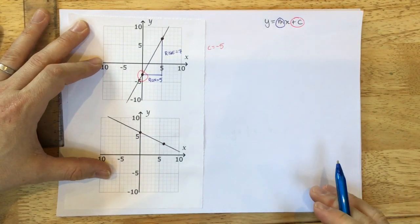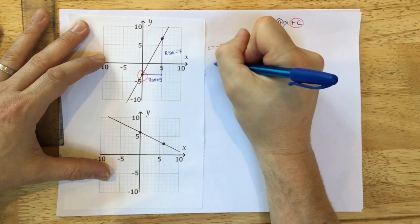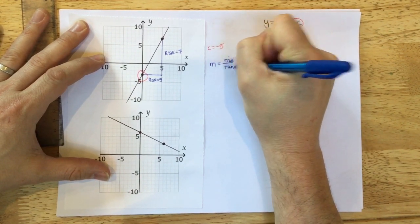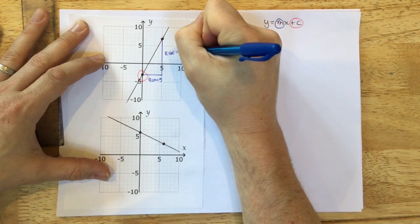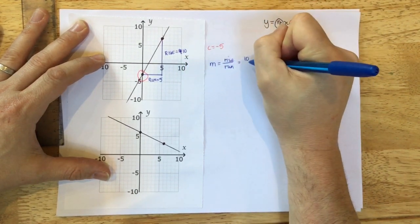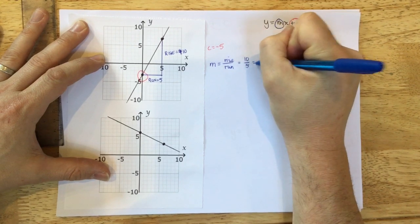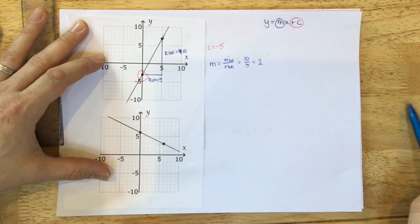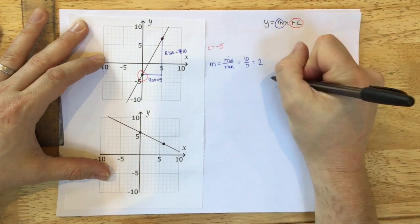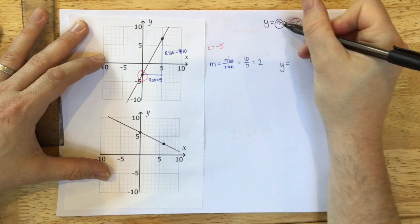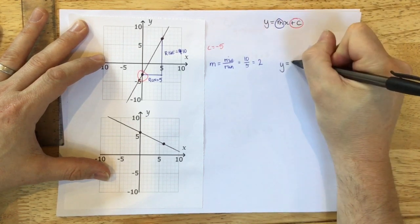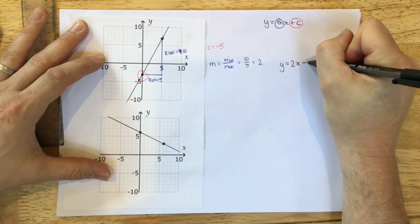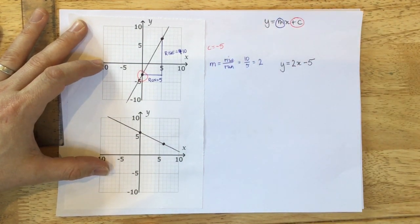So this time, rather than knowing the gradient, we're going to calculate the gradient. And the gradient is the rise over the run. So it should be 7 over 10, which is 10 over 5, which is 2. And now we know the gradient and we know the y-intercept, so we can write down the equation of that line. y equals, instead of mx, it's 2x. Instead of plus c, we've got what c is minus 5. So it's y equals 2x minus 5.